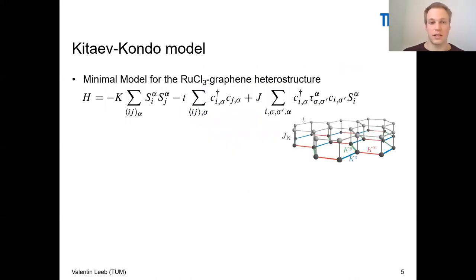That's where we started our research. Our idea was to construct a minimal model which is able to describe the heterostructure and explain what's going on with the quantum oscillations. For this, we have chosen a minimal model which consists of three terms. The first term is the usual Kitaev honeycomb term as I introduced earlier. The second term is a simple hopping Hamiltonian which is an effective description for graphene. And the last term, which is actually the key part, is a Kondo interaction between the spins of the Kitaev layer, S_i^α, and the spins of the graphene electrons which interact.